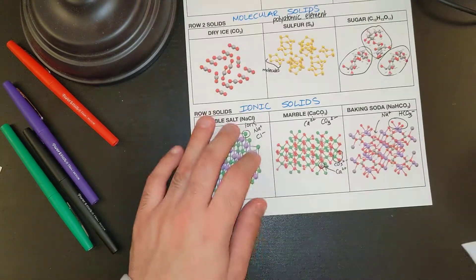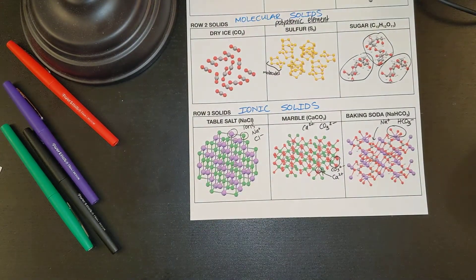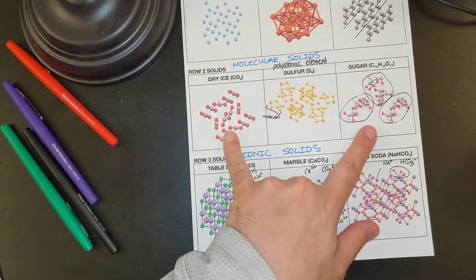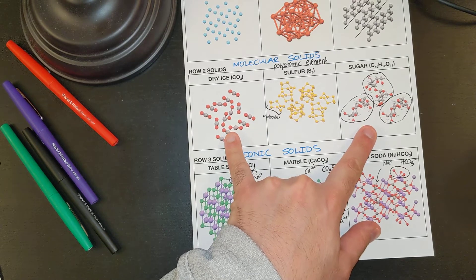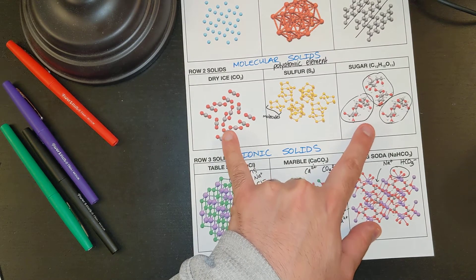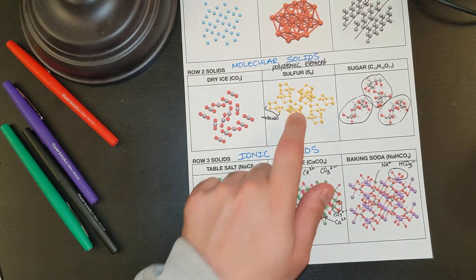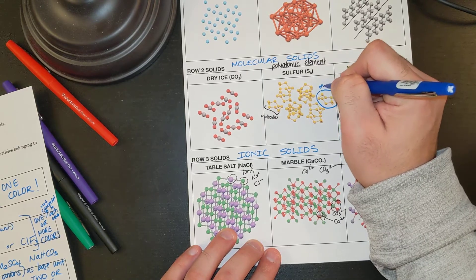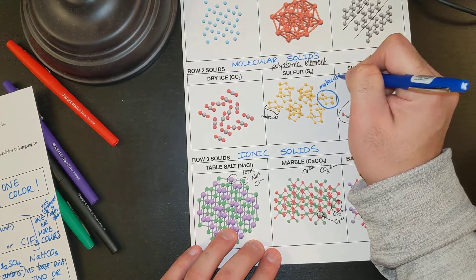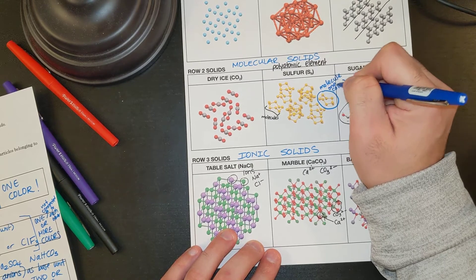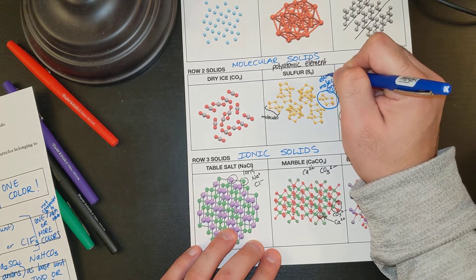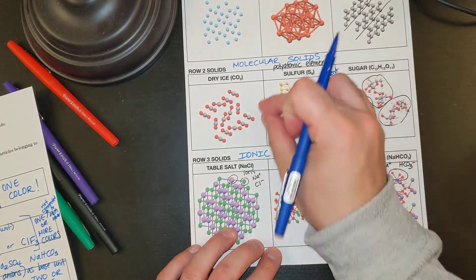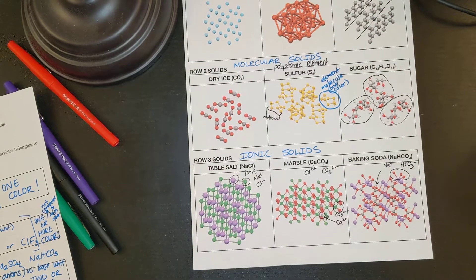So looking at our ionic solids here, and mine are in color, and if you print it out in color, you can see it too. They're all connected, and I have multiple colors. Looking at my dry ice and sugar, they're multiple colored too. And if we have black and white, it'll be shading. But they're not connected. Sulfur is the only weird one. We have to really look and see that this is a molecule here. One color though. This is an element. Element is a substance word. Molecule is a particle word. And they're not connected to each other. They're just connected within.